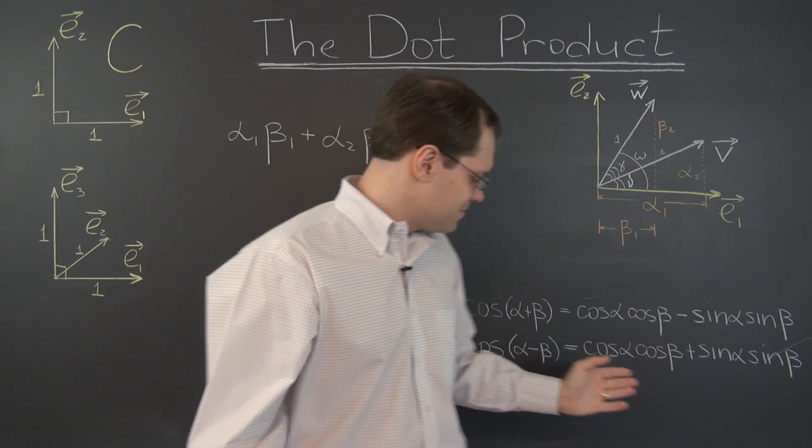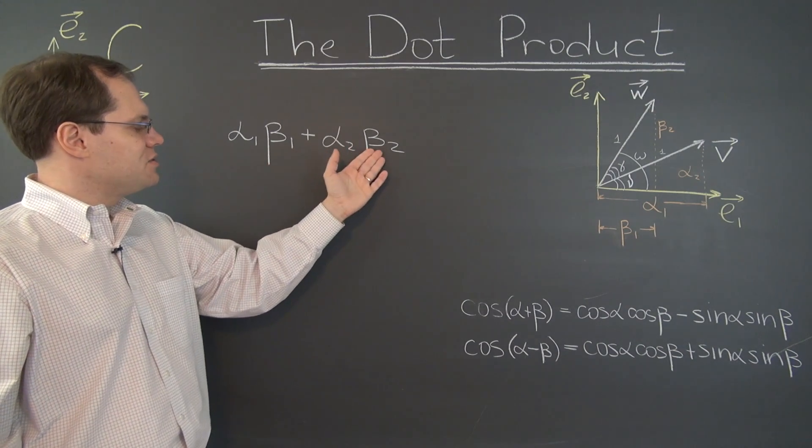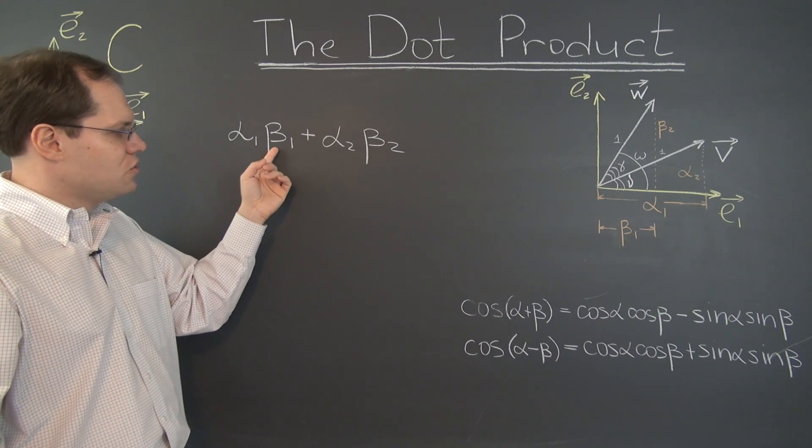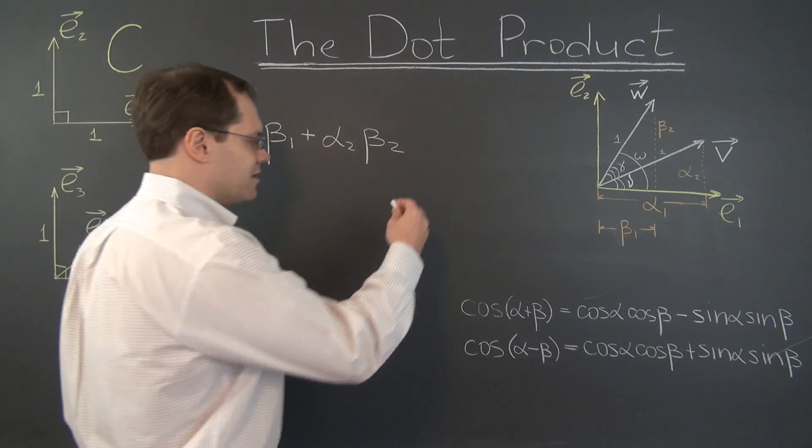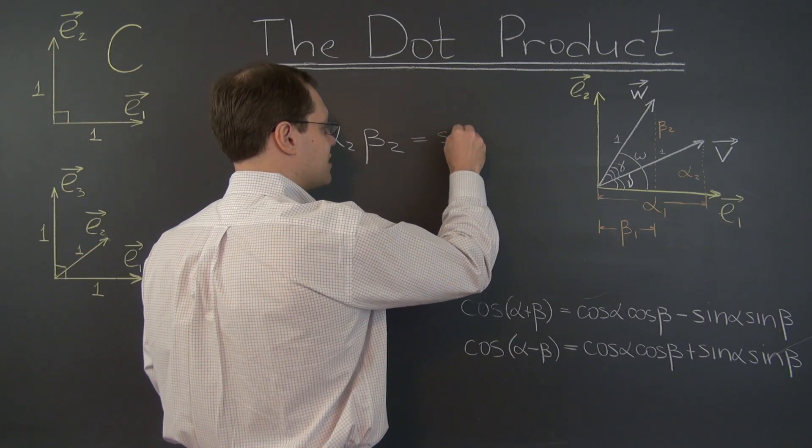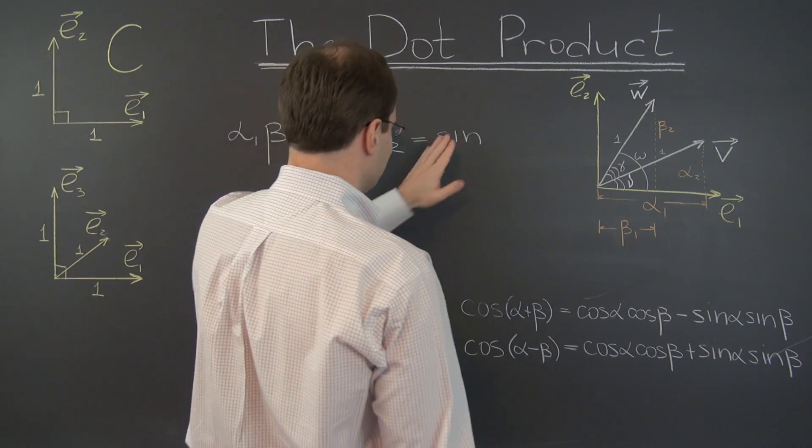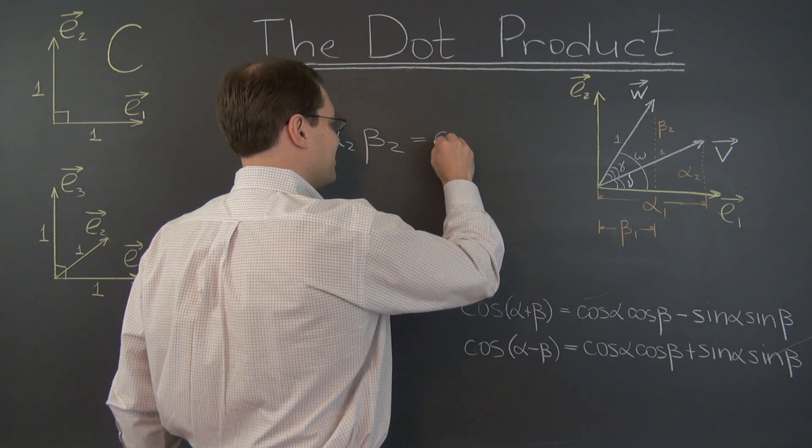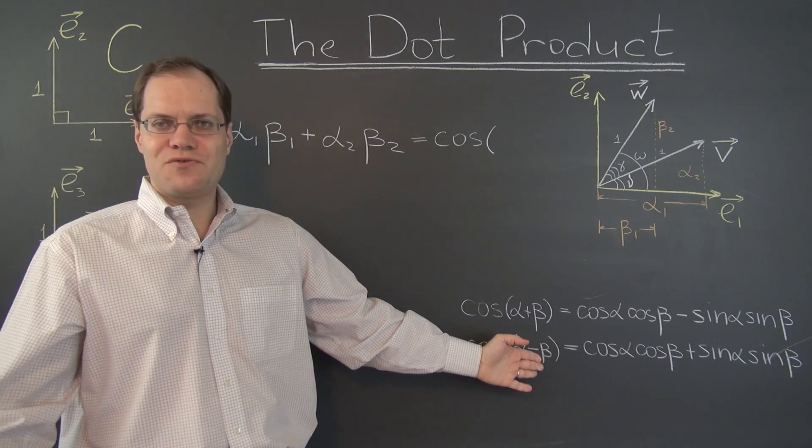Do you see where this is going? So alpha 1 beta 1 plus alpha 2 beta 2 is cosine nu cosine omega plus sine nu sine omega. And it equals—oh, we'll write it. Oh, excuse me. Oh, cosine. Sorry. Cosine of nu minus omega, just from this formula.